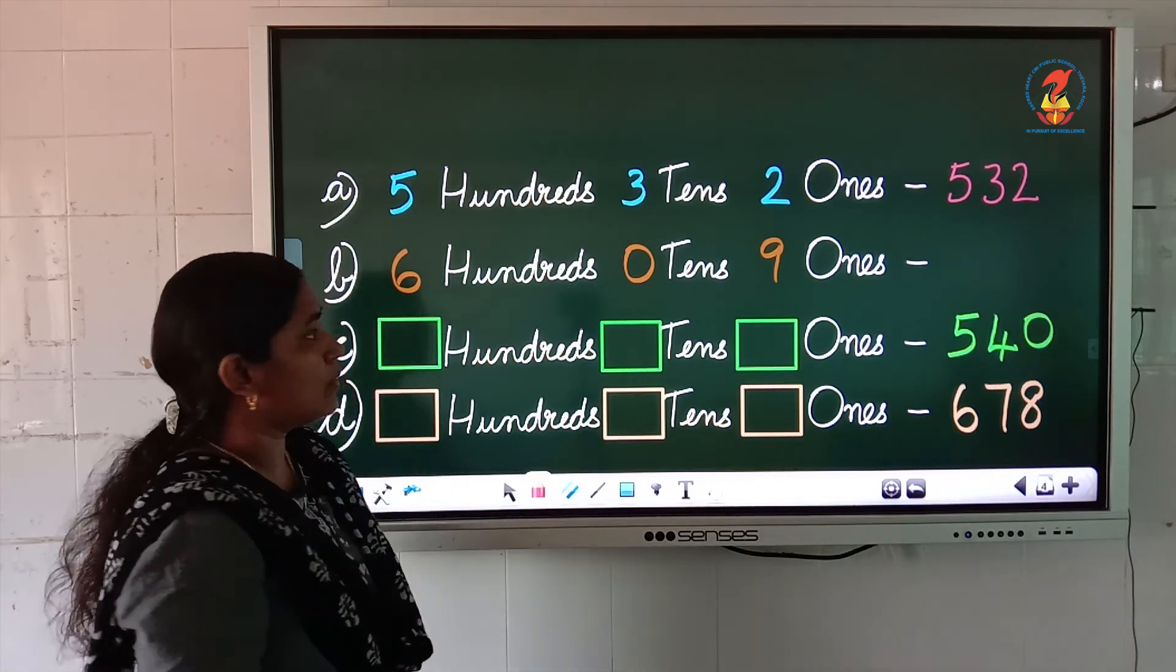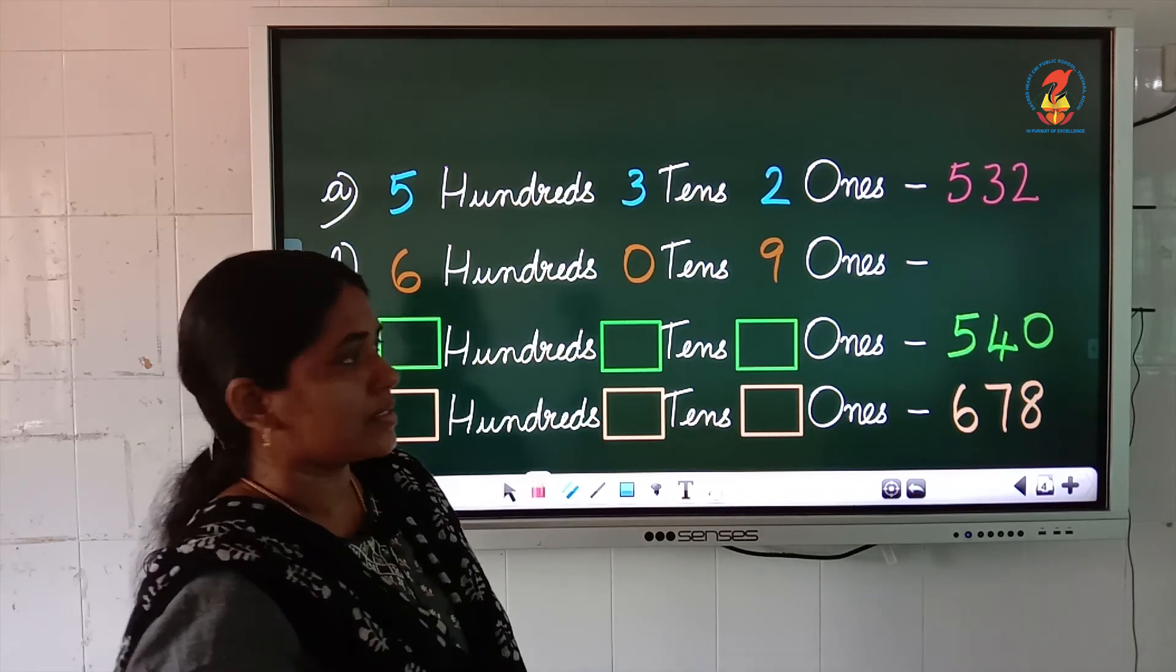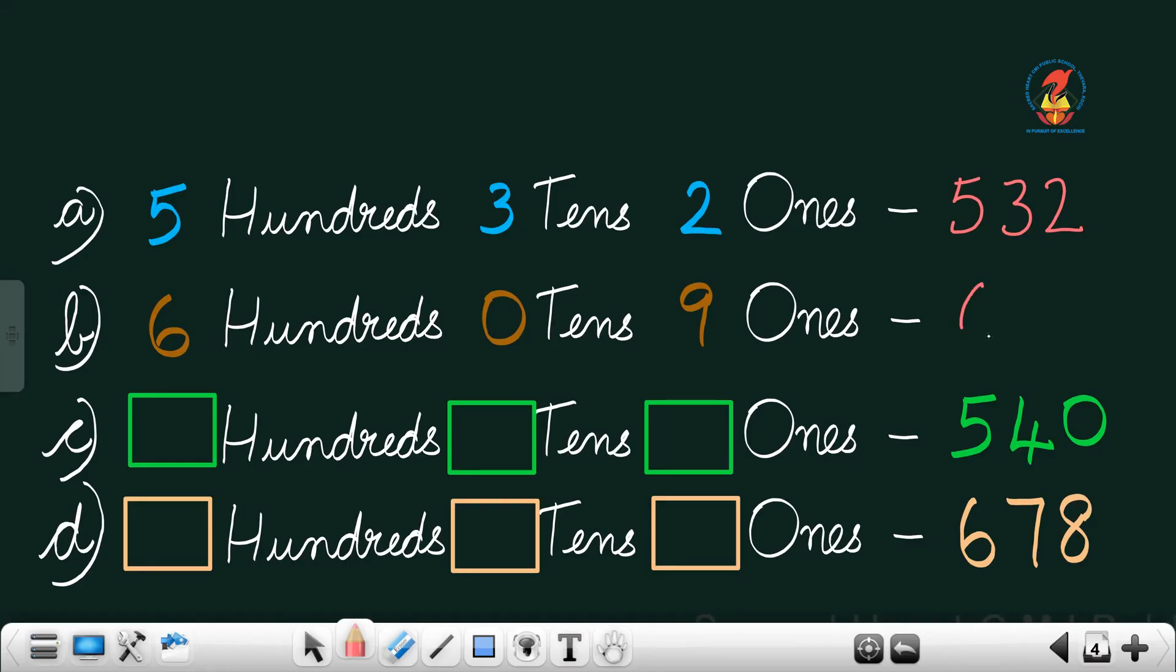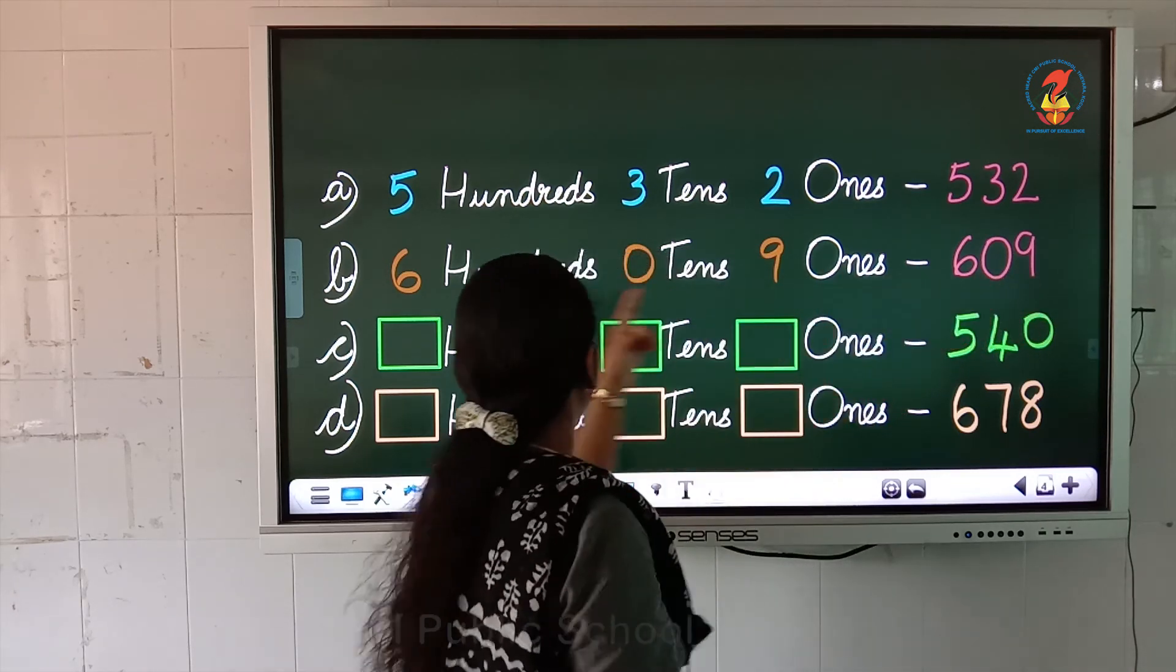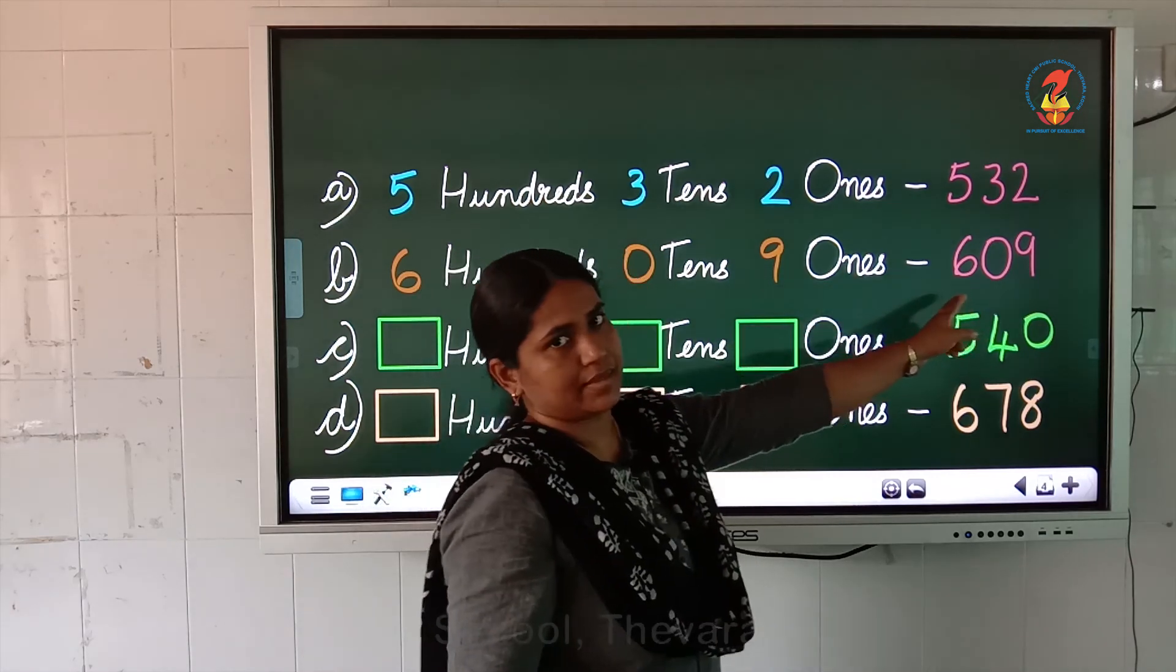600s, 0, 10s, 9, 1s. So, the number is 609. Check once again, 1s place is the number 9 and 10s place is 0, 100 place is 6. Okay.